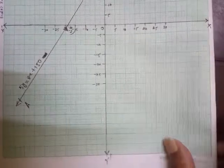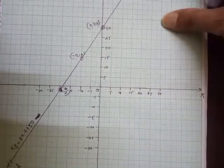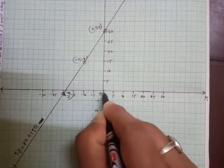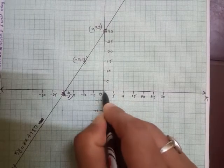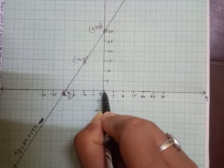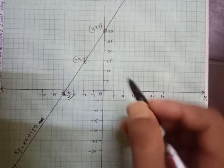I have taken the scale. Since the maximum coordinate here is 30, I have taken one small division... Not one actually. Two small divisions I have taken as 1 unit. I repeat again, two small divisions equal 1 unit.